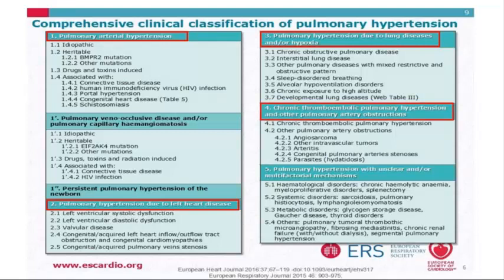CTEPH is group 4, mainly due to chronic thromboemboli, but there are other rare causes such as pulmonary artery angiosarcoma, rare parasitic diseases occupying the pulmonary artery, and vasculitis. Group 5 includes other causes such as sickle cell anemia—remember that was changed from group 1 to group 5. Even the ATS statement uses lower PVR for diagnosis; we usually define PH as PVR 3 or more, but in sickle cell anemia they lower it to 2 WU. Group 5 also includes sarcoidosis, LAM, histiocytosis X, renal failure on dialysis, and high cardiac output from fistula.